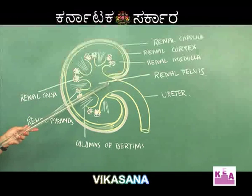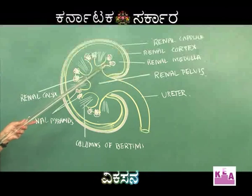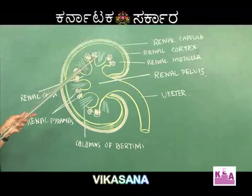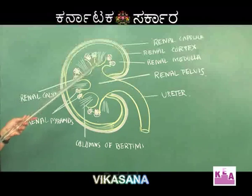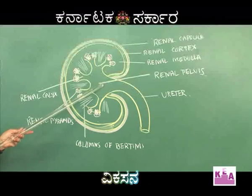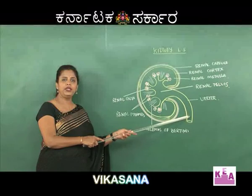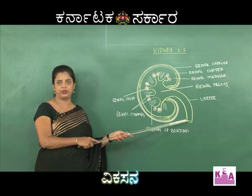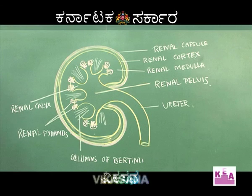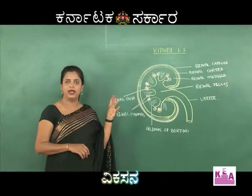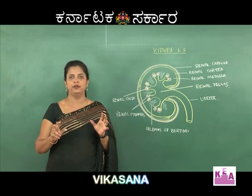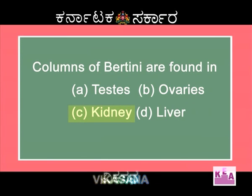Other parts of the kidney include the renal pelvis, which is divided into renal calyces, followed by renal pyramids. The renal pelvis collects all the urine from these structures, which then passes to the ureter, and from there into the urinary bladder, where it is micturated. This kidney structure is important for identifying correctly labelled parts in exams. The answer to the columns of Bertini question is kidney.